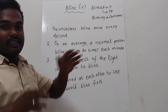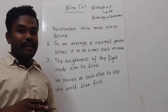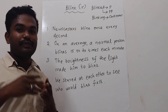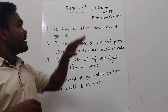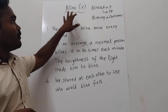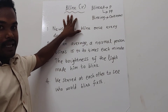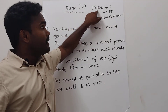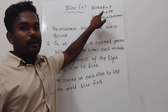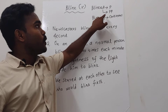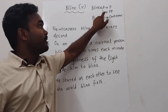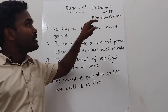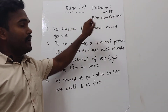This word is basically a verb and as we know verbs can have different forms. The base form of this verb is blink, the past form is blinked, the past participle form is also blinked, and the continuous form of this verb is blinking.